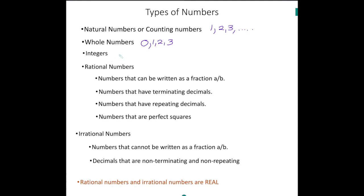Integers are defined as your whole numbers 0, 1, 2, 3, and their opposite: negative 3, negative 2, negative 1.